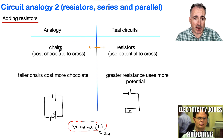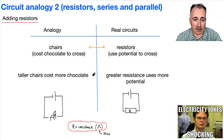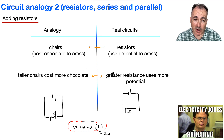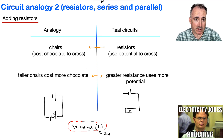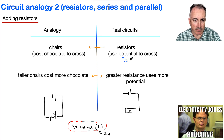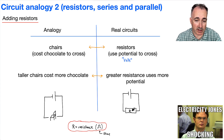Each chair is going to represent a resistor. And if you have a taller chair, it costs you more chocolate — that means a greater resistance uses more potential. Remember what potential is — those are your volts. So resistors cost you potential.